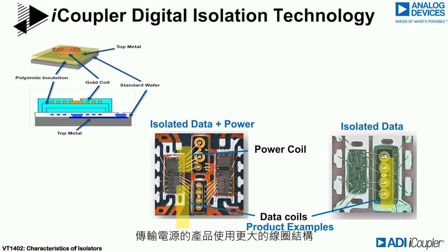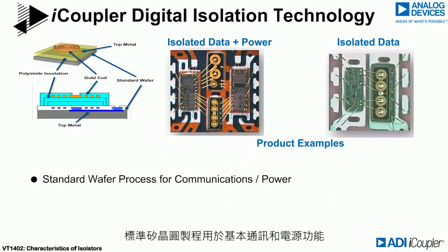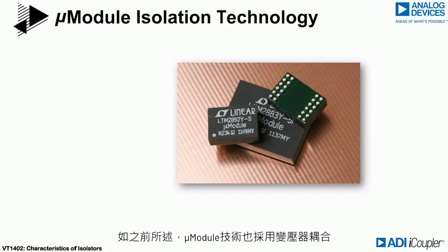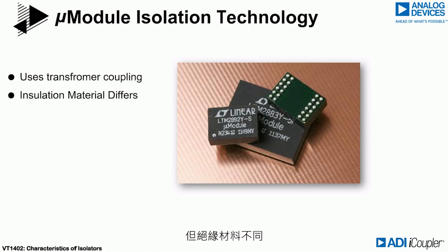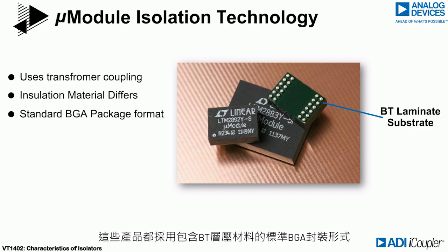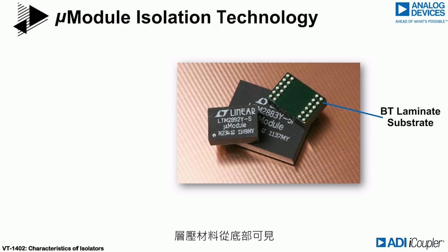Products that transfer power use a larger coil structure. Standard silicon wafer processes are used for the basic communications and power functions, with the polyimide and gold coils deposited in a dedicated internal foundry. As noted previously, micromodule technology also uses transformer coupling, but a different insulation material. These products are in a standard BGA package format that contains a BT laminate material, which is visible from the bottom.